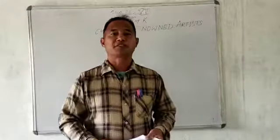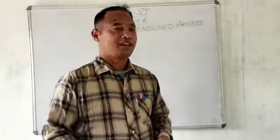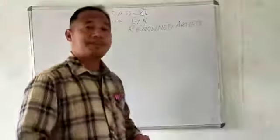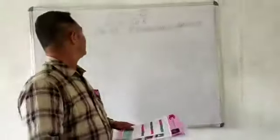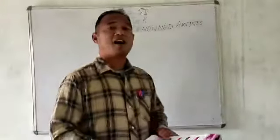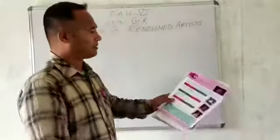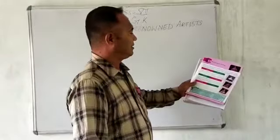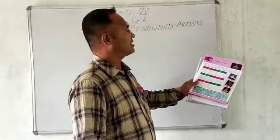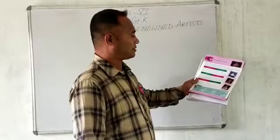Good morning, students of class 7. Today I am here to explain G.K. Chapter 13, Renowned Artist. Please see your book, Chapter 13. The name of the chapter is Renowned Artist, page number 21.